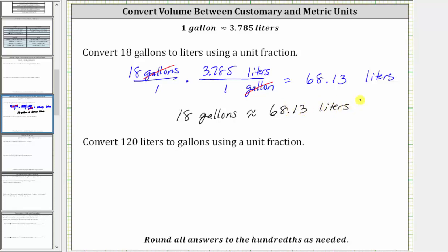And now for the second conversion, we're asked to convert 120 liters to gallons. We begin by writing 120 liters as a fraction with a denominator of one. Now we multiply by a unit fraction. Because we want liters to simplify out, and right now we have liters in the numerator, we must have liters in the denominator of the unit fraction and gallons in the numerator.